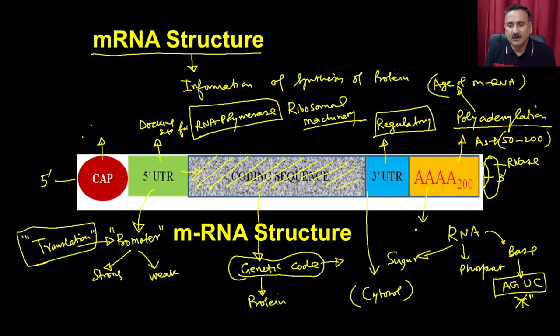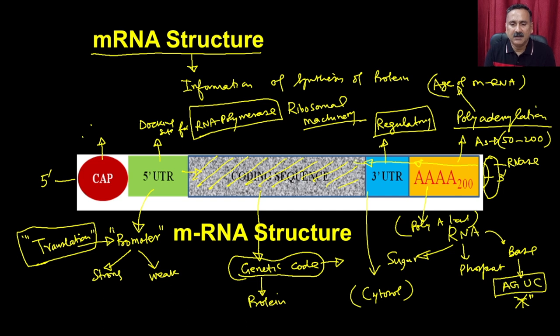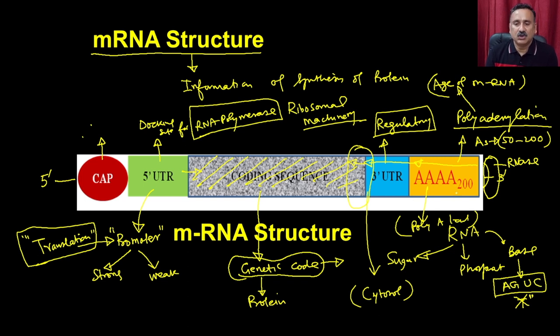The poly-A tail length decides the stability of the messenger RNA within the cytosol. Once the RNases chew through the poly-A tail and hit the coding sequence, the mRNA is no longer useful for protein synthesis — it would start synthesizing cryptic or truncated proteins, which may not be good for the cell. So the length of the poly-A tail determines the age or stability of the messenger RNA.